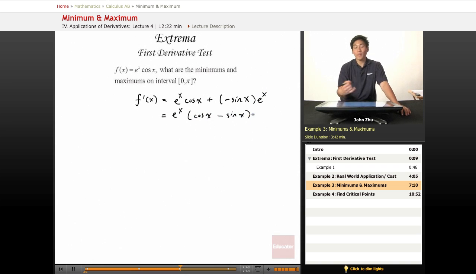But we're looking for a minimum and maximum, so we're testing for critical values, critical points. So we set this equal to 0, and we end up with cosine of x equals sine of x. And this x can only be pi over 4, or multiples of pi over 4. But we're looking for the interval between 0 and pi, so pi over 4 is the only critical value.